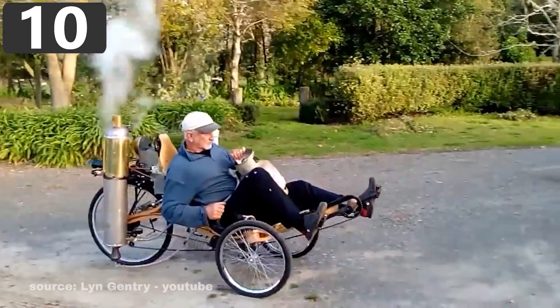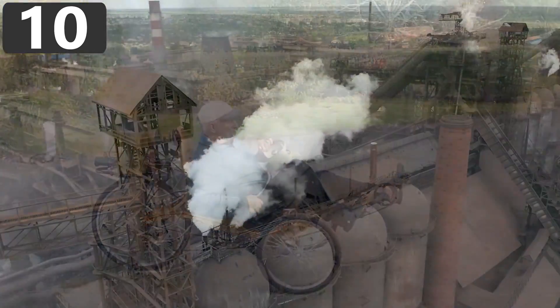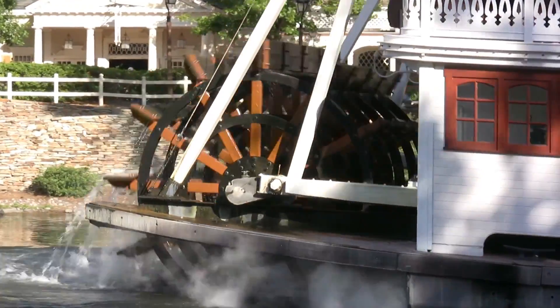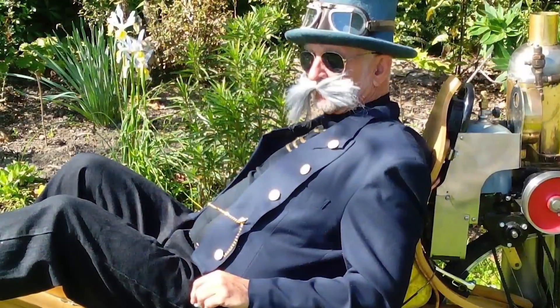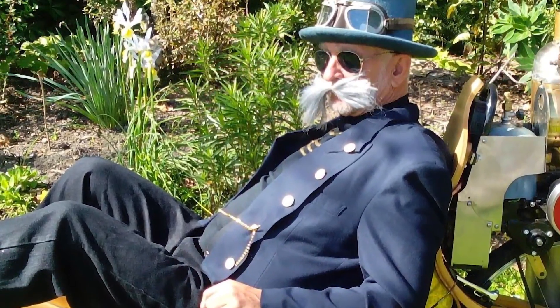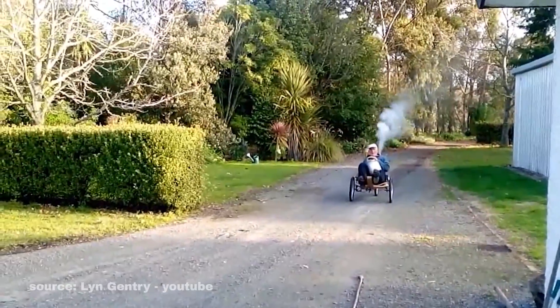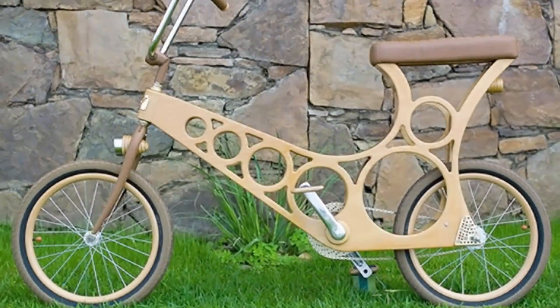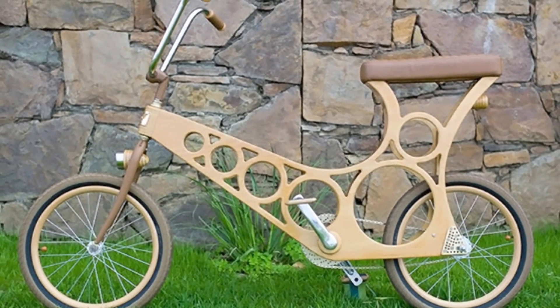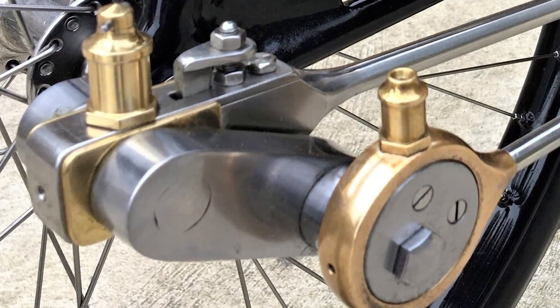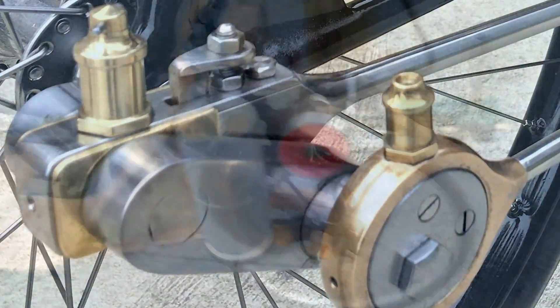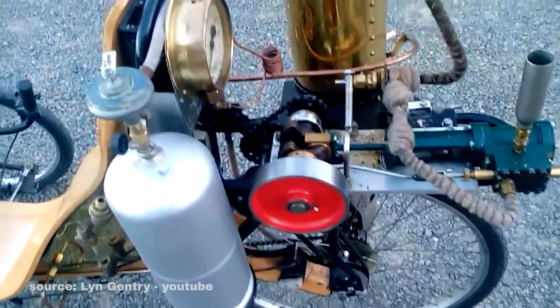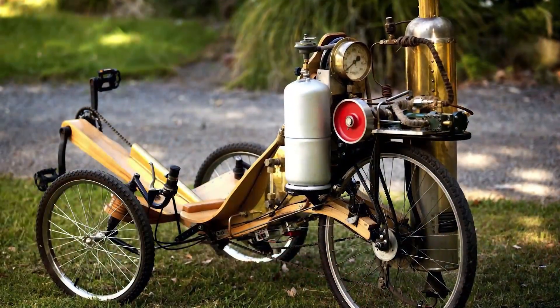Number 10: Steam Machine Bike. While most steam engines are used in factories, steamboats, cars, and even rockets, one man decided to use his skills and knowledge to create a steam machine bike. Lynn Gentry is known for his extremely interesting and unique bicycle designs. The Australian engineer has built everything from mono wheels to wooden bikes and motorcycles and has been in the engineering world for decades.